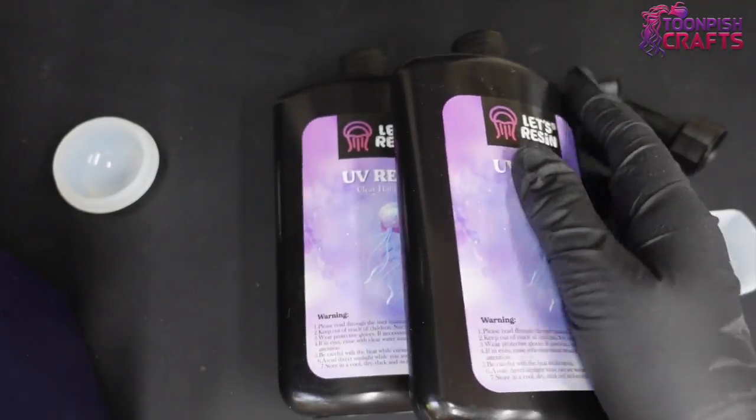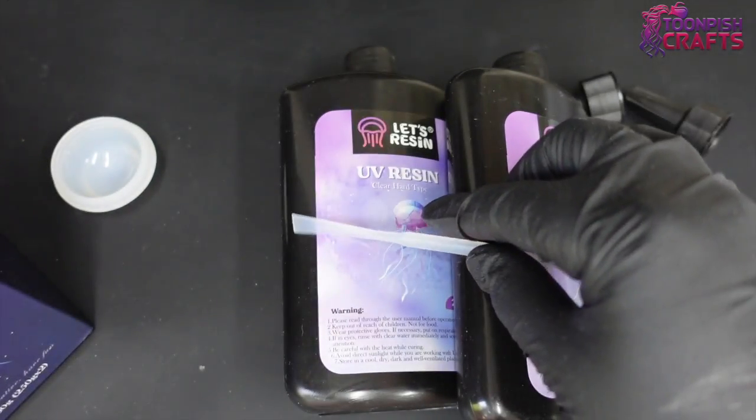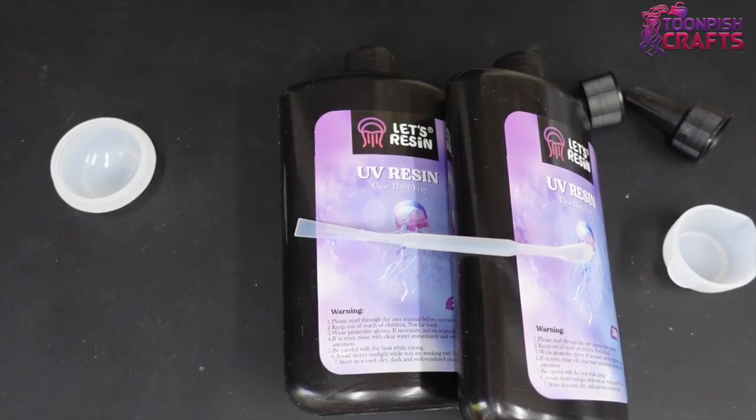In this huge kit you get two big bottles of UV resin, you get a little measuring cup, you get a little stir stick, and you get the two lids and a nice leaflet of instructions.